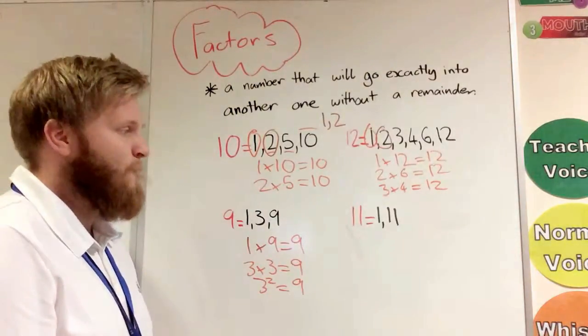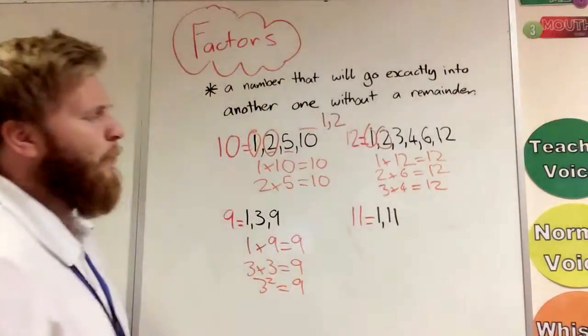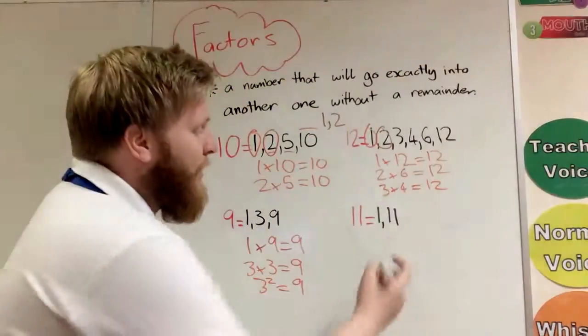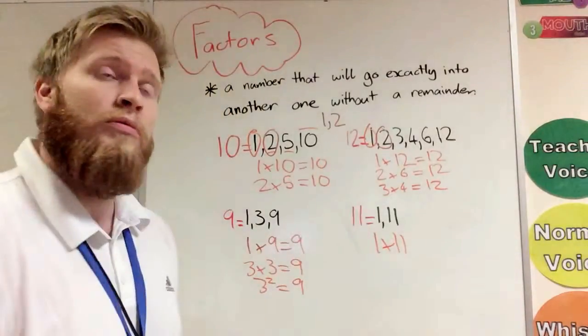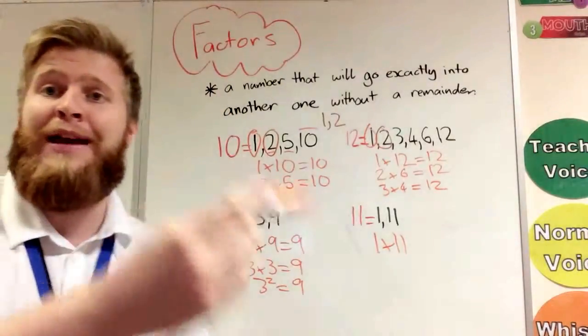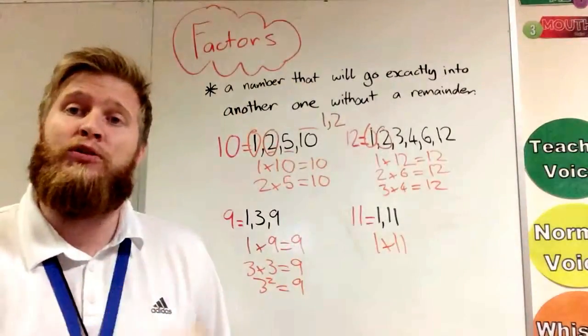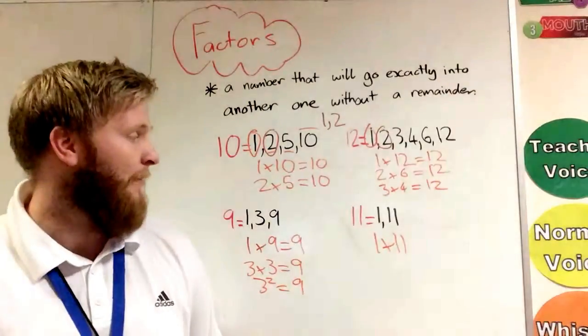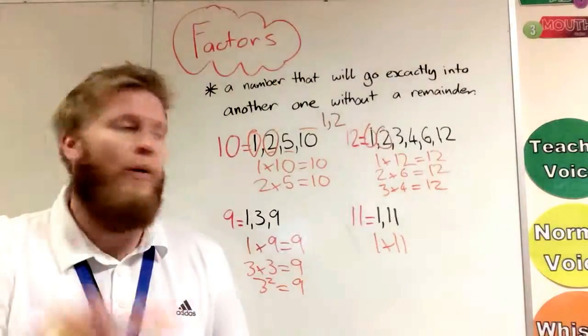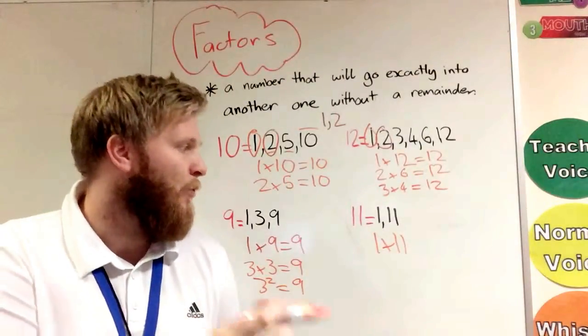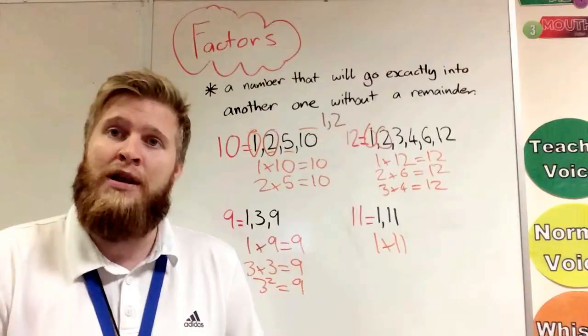I've got another number here, which is 11. Now 11 only has two factors—1 times 11. 2 times, we get to 10, then we'd go over to 12, so we've got 1 left over. 3, we'd go to 9 and then 12, so that wouldn't have it.